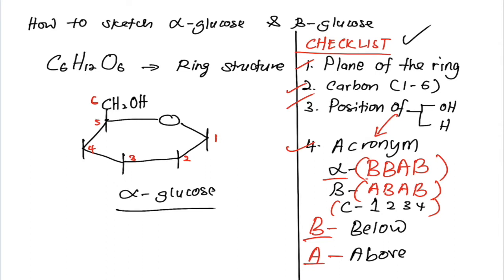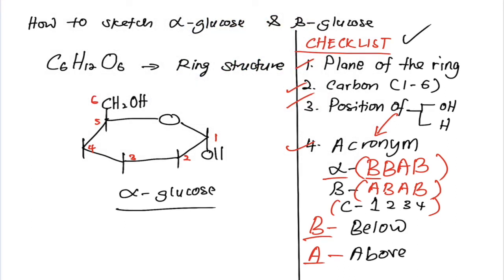So for carbon number one, the hydroxyl group will be in the below plane of the ring. Carbon number two, below plane of the ring. Carbon number three, above plane of the ring. And carbon number four, below plane of the ring. And the hydroxyl group, we complete from carbon number one to carbon number six.